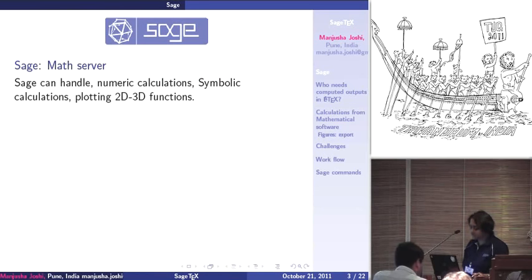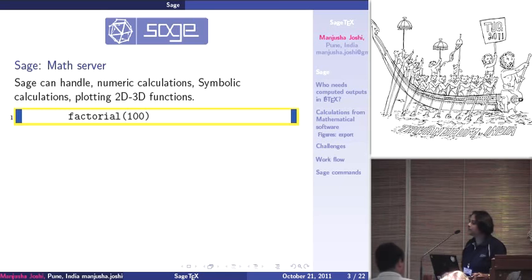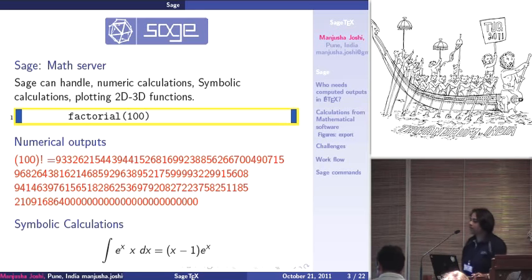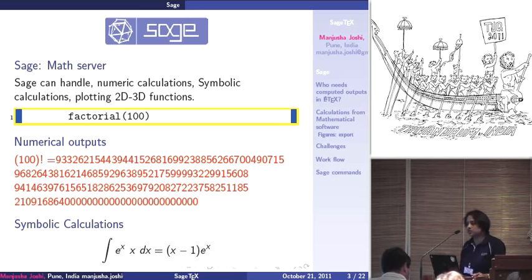Sage is one of the software which we found very useful, because it can handle symbolic calculations, it can handle numerical calculations. And if you get something, you always need to ask for something more. For example, if one wants to see the factorial of 100, this is the output which can be generated by Sage. Now, the question is how one can include it in a TeX document. Generally, one possible way is to cut and paste. Here you can also see symbolic calculations are possible with such type of software.